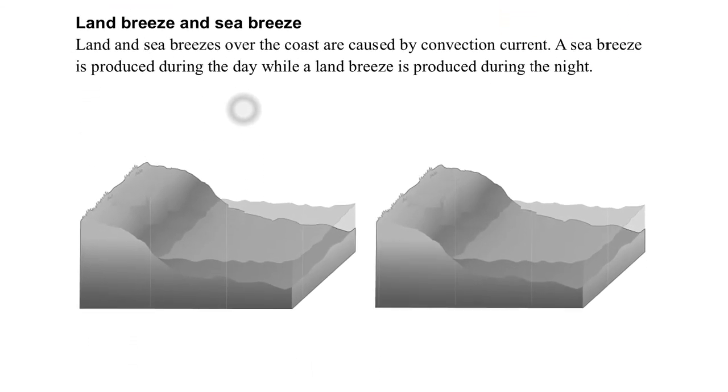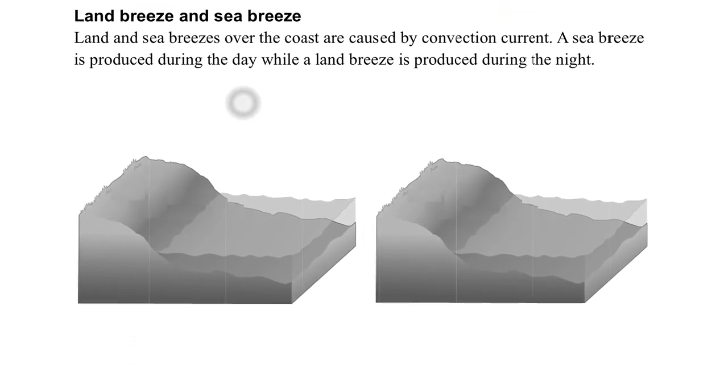Another example is the land breeze and sea breeze. It's due to the convection current. Land breeze means the wind comes from the land to the sea, and sea breeze means the wind comes from the sea towards the land. During the daytime, the land is warmer than the sea, so the hot air rises. The air from the sea will come to replace it and form the sea breeze.